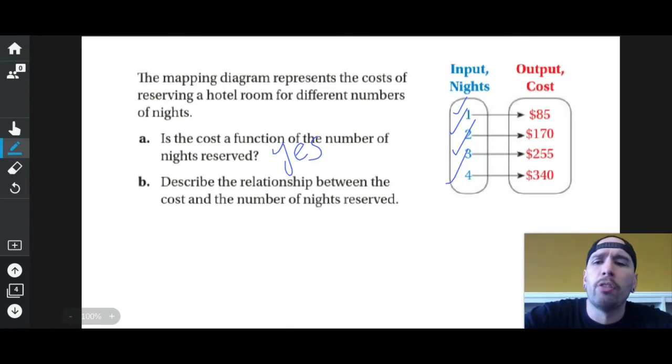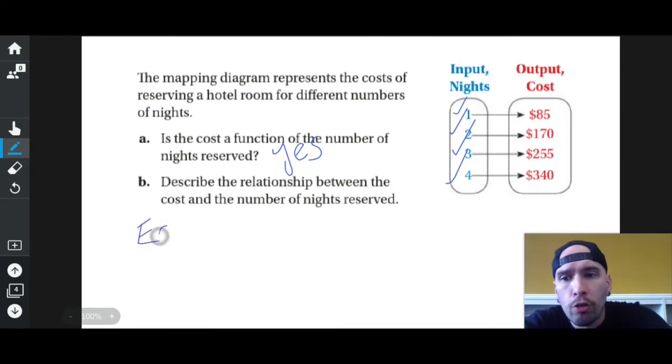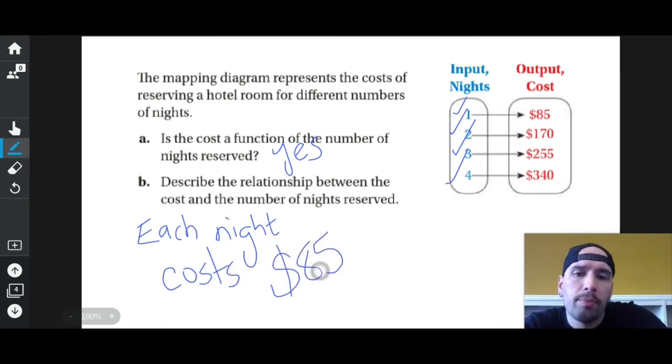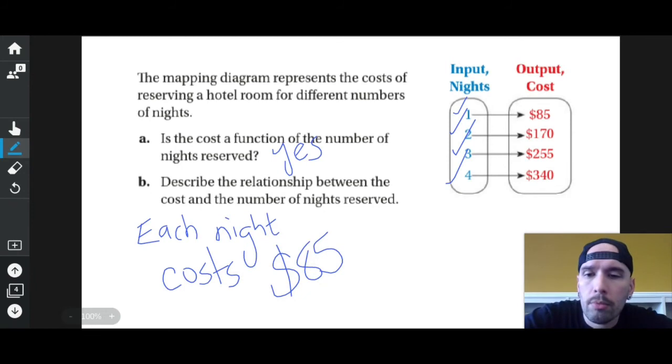Describe the relationship between the cost and the number of nights reserved. Well, it looks to me that every extra night, or each night, costs $85.